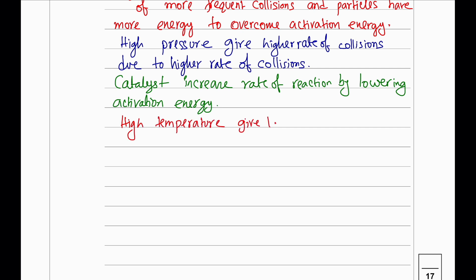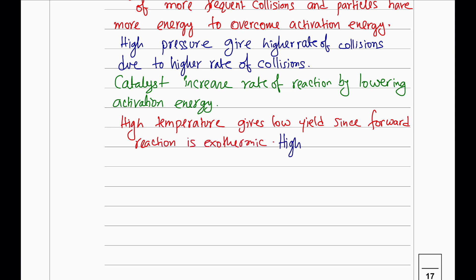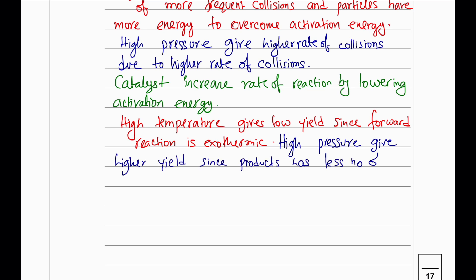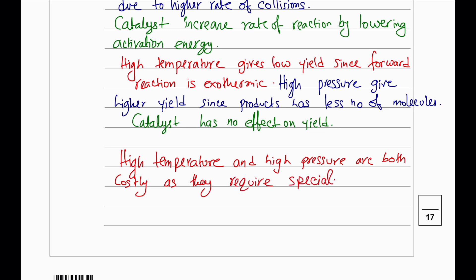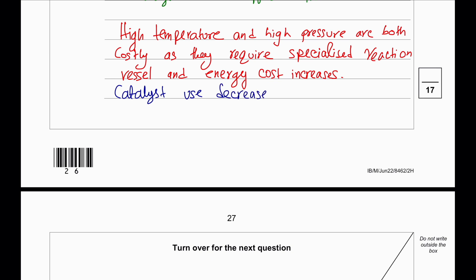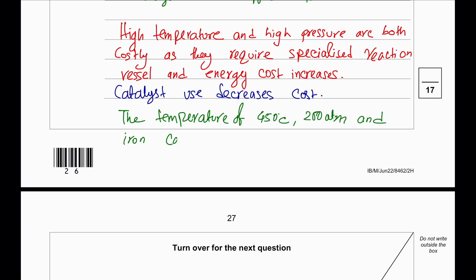Other economic factors: higher temperature (450°C) uses more energy, increasing cost since high temperatures are derived from fossil fuels. High pressure (200 atm) also uses more energy, increasing cost. Pressure higher than 200 atm requires even stronger reaction vessels, increasing initial setup cost. The use of a catalyst reduces energy cost, making it more efficient. The temperature chosen is a compromise between rate of reaction, position of equilibrium, and cost. The pressure chosen is a compromise between yield, rate, and cost.